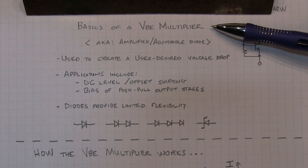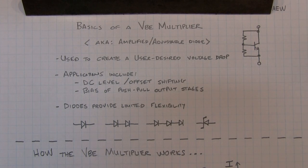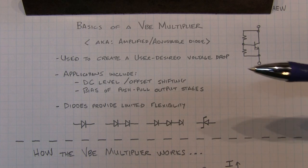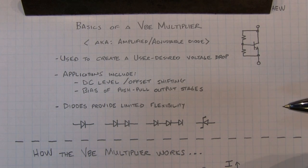The VBE multiplier, also known as an amplified or adjustable diode, is a circuit that's used to create a user-desired voltage drop.